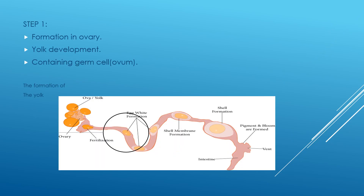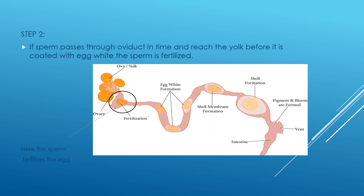Formation of egg begins in the ovaries of poultry with the development of a yolk that contains the germ cell. The germ cell contains the chromosomes that get united to form an egg. The sperm passes through the oviduct in time and reaches the yolk before it is coated with egg white, where fertilization occurs.